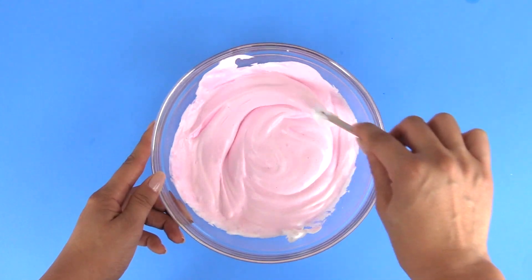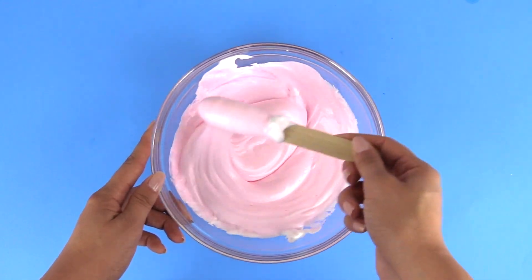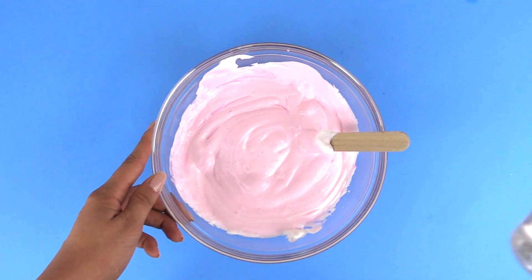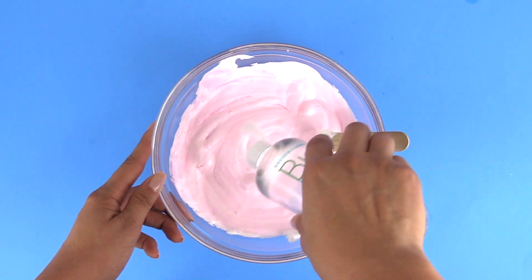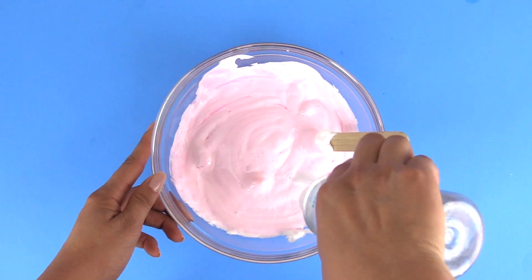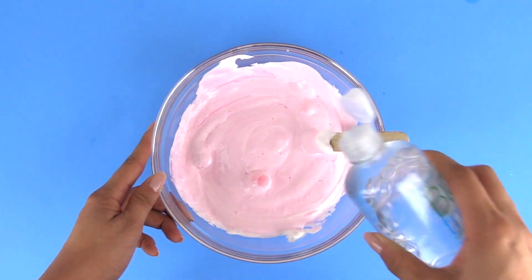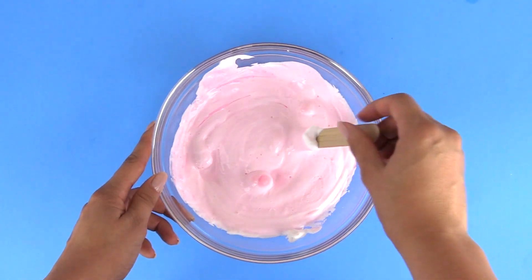Now that we have the shaving cream mixed in with the glue pretty well, we're going to be adding in our contact solution. So let's add some in on top and let's mix it around.